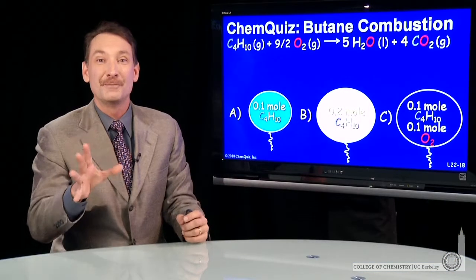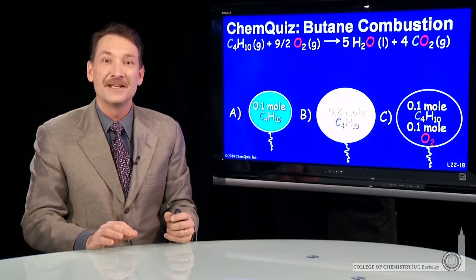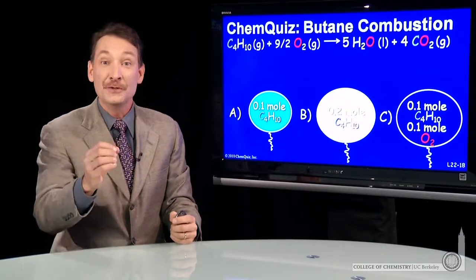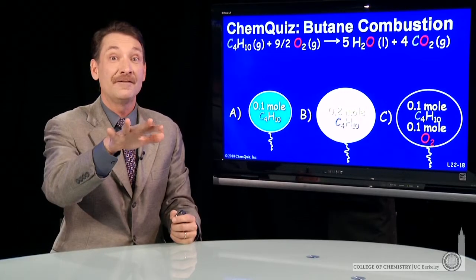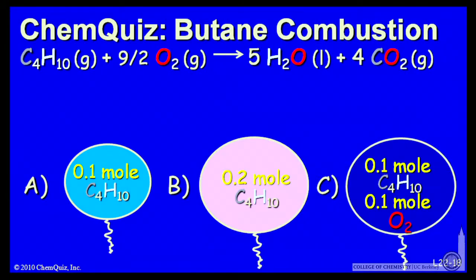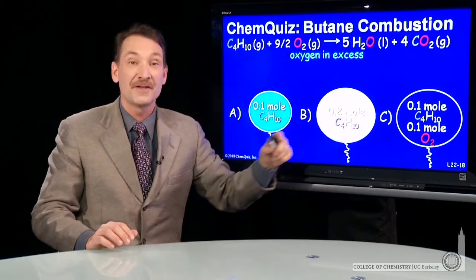We're talking about burning butane and oxygen. And in each case, oxygen is in excess. So butane limits the amount of energy you release. The more butane I have, the more energy will be released. So in this case, B with 0.2 mole will release more energy than the 0.1 mole here or the 0.1 mole here.